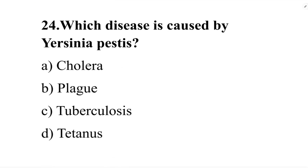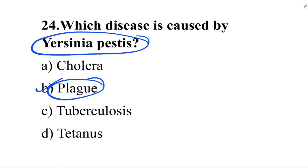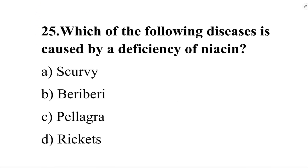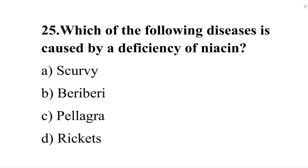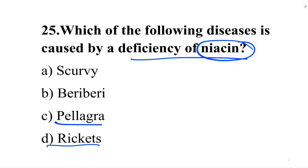Next question: which disease is caused by a deficiency of niacin? Option A: scurvy. Option B: beriberi. Option C: pellagra. Option D: rickets. The correct answer is option C, pellagra. It is caused by the deficiency of niacin.